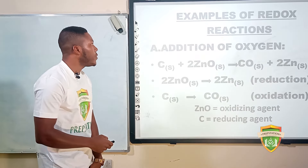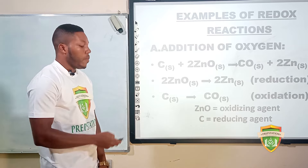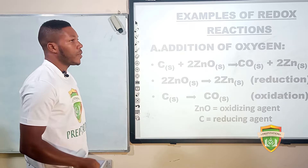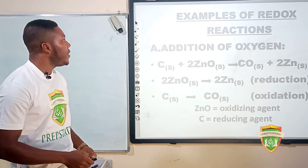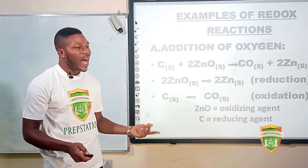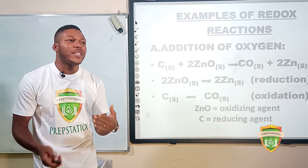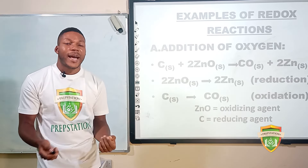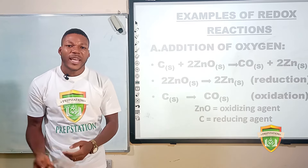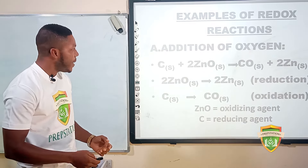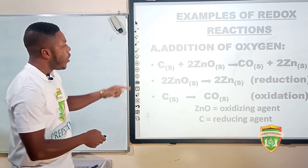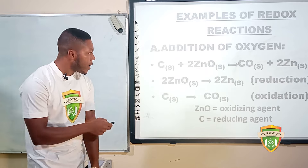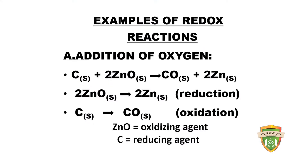Here are some examples of redox reactions. First, addition of oxygen: when defining reduction and oxidation, reduction involves a gain of electrons, addition of hydrogen, and loss of oxygen. Let's see how the addition of oxygen can define a redox reaction. We have carbon reacting with zinc(II) oxide to give carbon(II) oxide and zinc metal.